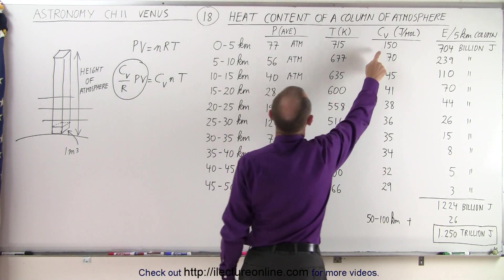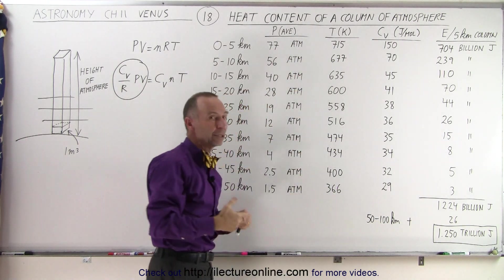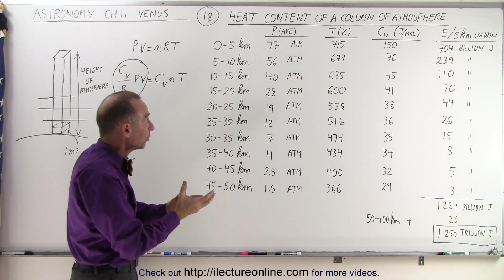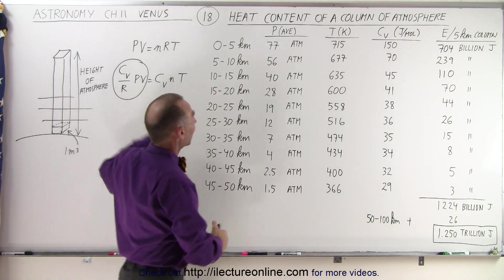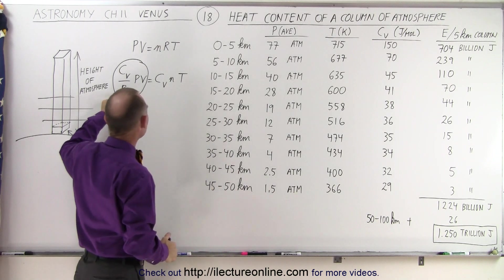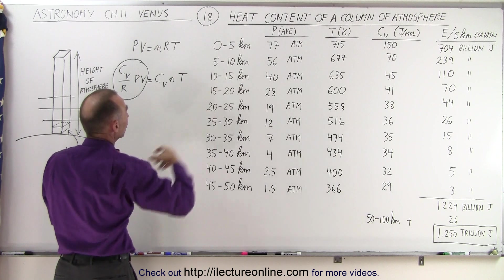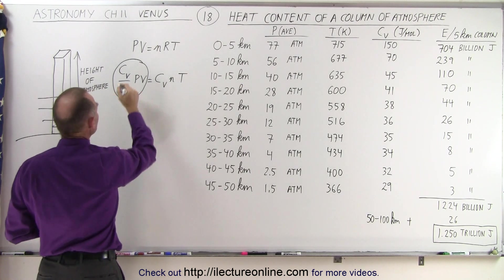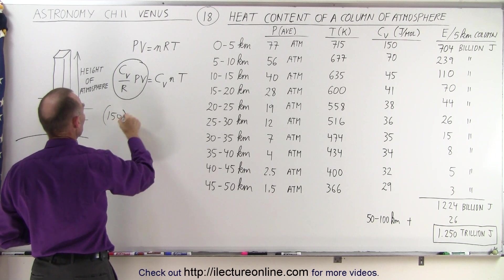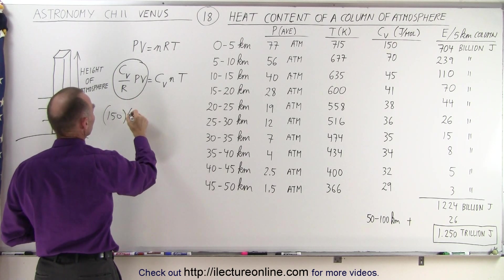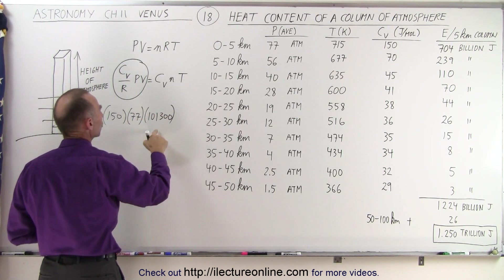Now when we do the calculations, we take the specific heat and multiply that times the pressure. Of course, we have to multiply the number of atmospheres by 101,300 pascals for each atmosphere. We multiply that times the volume, which is one cubic meter, and divide that by the gas constant, which is 8.315. So as an example, for the top portion, we take the specific heat, which is 150, multiply that times the pressure, which is 77, times 101,300, that's newtons per square meter.